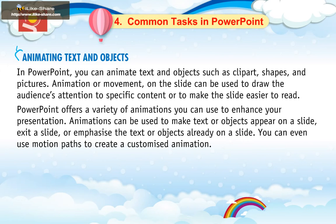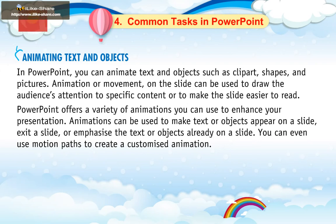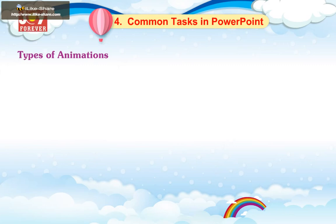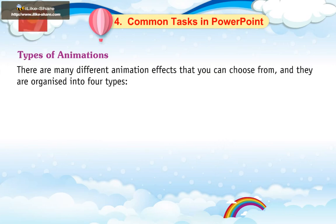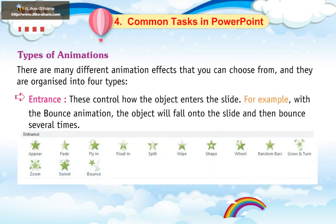PowerPoint offers a variety of animations you can use to enhance your presentation. Animations can be used to make text or objects appear on a slide, exit a slide, or emphasize text or objects already on a slide. You can even use motion paths to create a customized animation. Types of animations: Entrance — these control how the object enters the slide. For example, with the bounce animation, the object will fall onto the slide and then bounce several times.